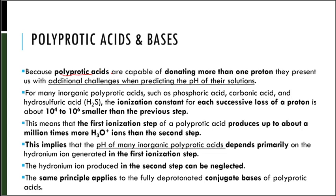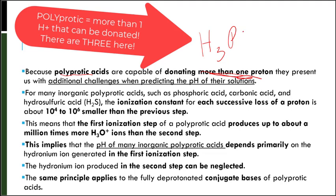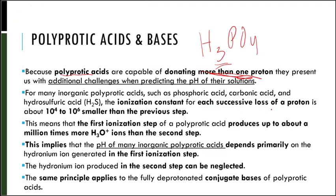Because polyprotic acids are capable of donating more than one proton, they present us with additional challenges when predicting the pH of their solutions. For many inorganic polyprotic acids like phosphoric acid, H3PO4, notice that we have more than one hydrogen that can be donated. The ionization constant for each successive loss of a proton is about 10 to the 4th to 10 to the 6th smaller than the previous step.